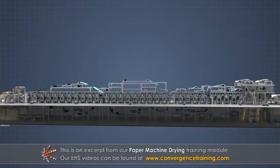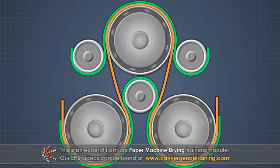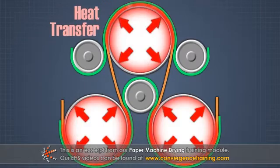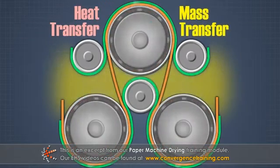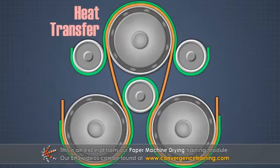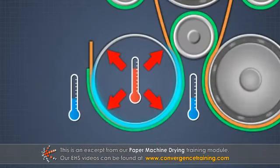On a paper or board machine, the drying process involves both heat transfer and mass transfer. Heat transfer is the movement of thermal energy due to a temperature difference.